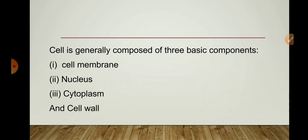If we observe a cell under a microscope, we are able to see 3 components in almost every cell, and those are cell membrane, nucleus, and cytoplasm. Today we are going to learn about these components of the cell and also about cell wall.